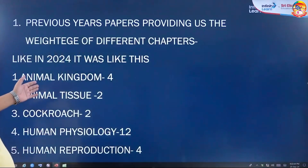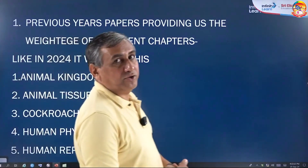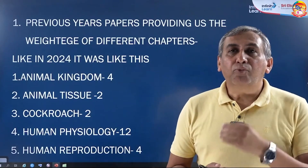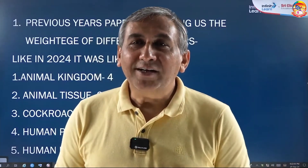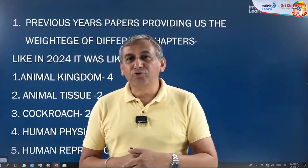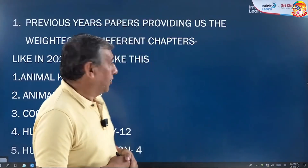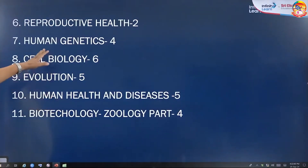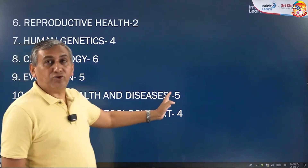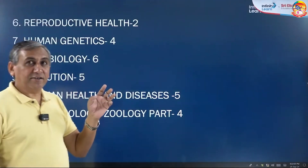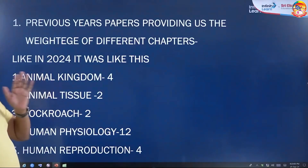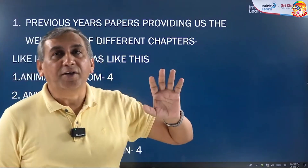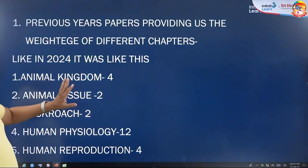I will share the 2024 paper. First of all, it tells us what is the weightage of any chapter. We are working a lot in human physiology — you will be surprised at its weightage. There are six chapters in human physiology and they are asking 12 questions. Whereas one chapter, Human Health and Disease, provides 20 marks — five questions. By reading only one chapter you get 20 marks, and by reading all six chapters you get 48 marks.